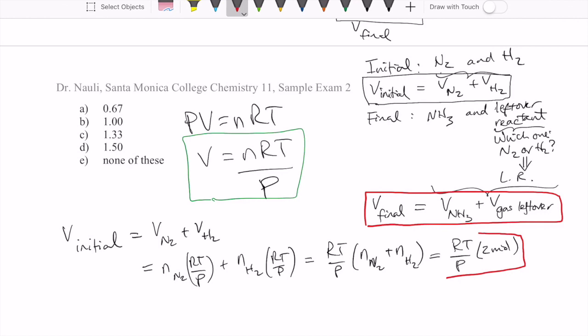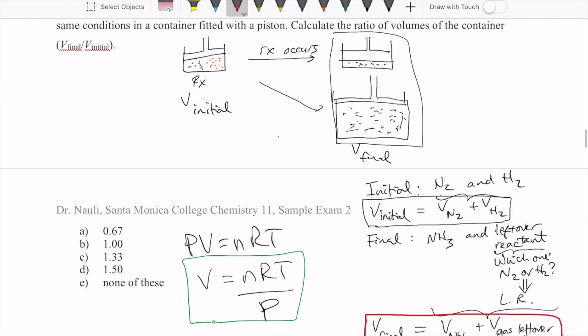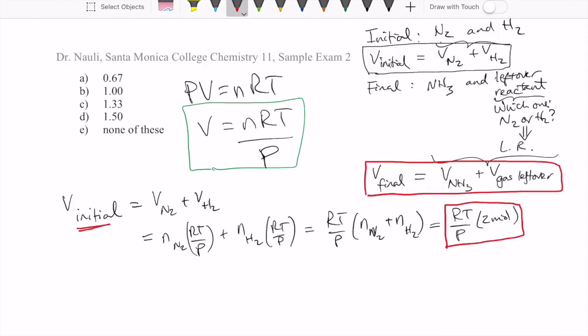A lot of times students are worried that we don't have actual numbers to plug in. But because what we want to do at the end is calculate a ratio final over initial, you can see that these variables, because they don't change, they're just going to cancel out.